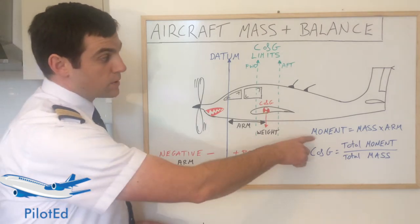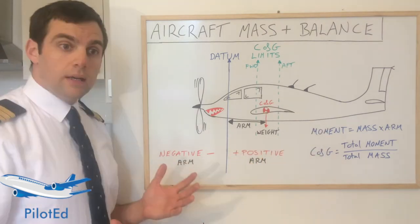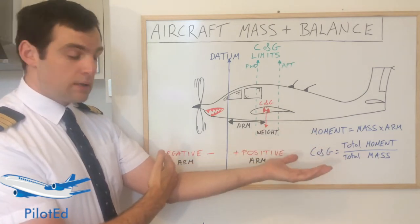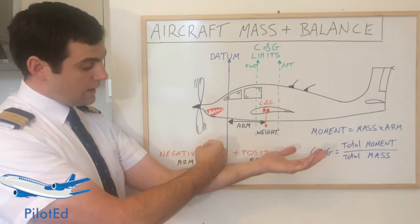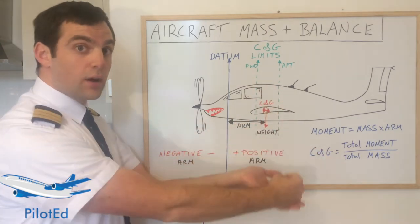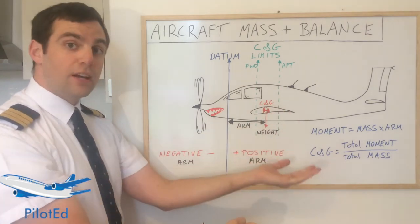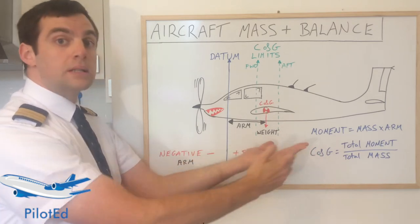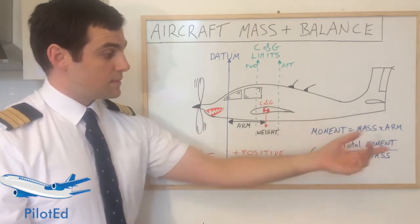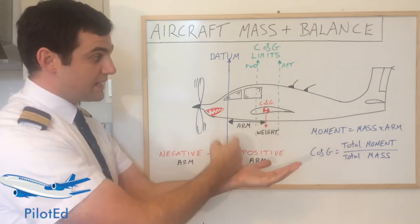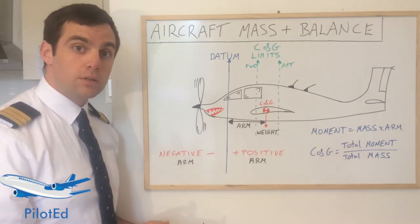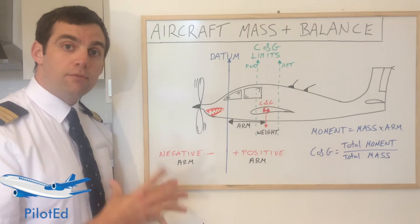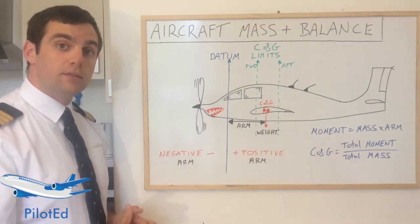An important equation you need to know is: moment equals mass times the arm. If you imagine your elbow as the datum — the pivot point — and you stick a weight halfway down your arm, that same weight placed at the tip of your arm will create a greater force. You have to generate a greater force to counteract that weight when it's further away, because the arm is longer. So moment is mass times the arm, and that same mass further from the datum will generate a bigger moment — because physics.